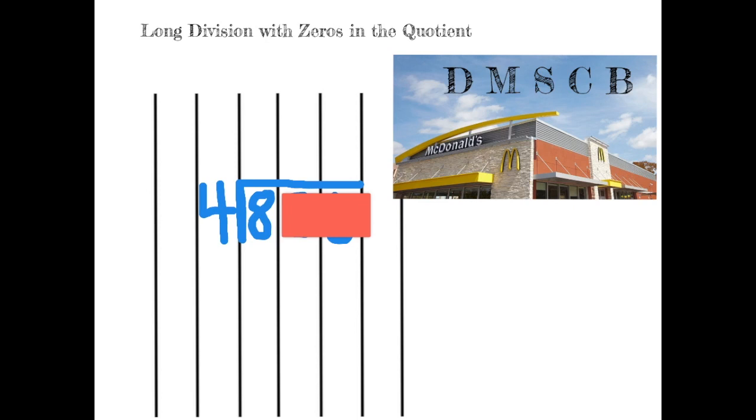I find it sometimes easier to take one digit of your dividend at a time and break it into smaller parts. For example, if we cover up the last two digits, we now have a simple division fact of 8 divided by 4.